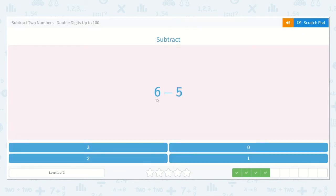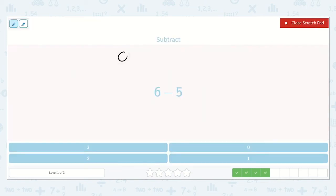The next one shows 6 minus 5. All right, so we can draw 6. 1, 2, 3, 4, 5, 6. And we can cross off 5 of them because we are subtracting or taking away 5. 1, 2, 3, 4, 5. There is just 1 left. All right, here is the 1.